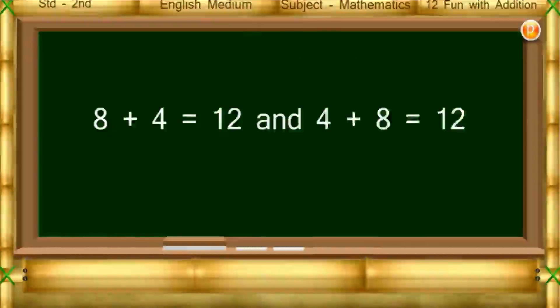2 plus 7 equals 9 and 7 plus 2 equals 9. 8 plus 4 equals 12 and 4 plus 8 equals same 12. 5 plus 6 equals 11 and 6 plus 5 equals same 11.